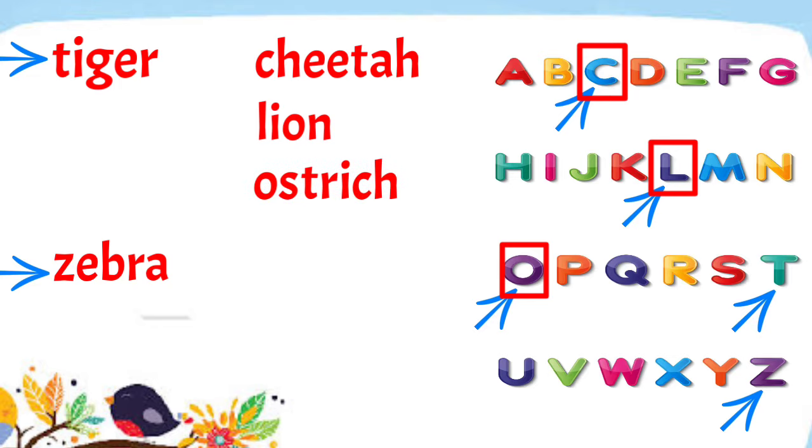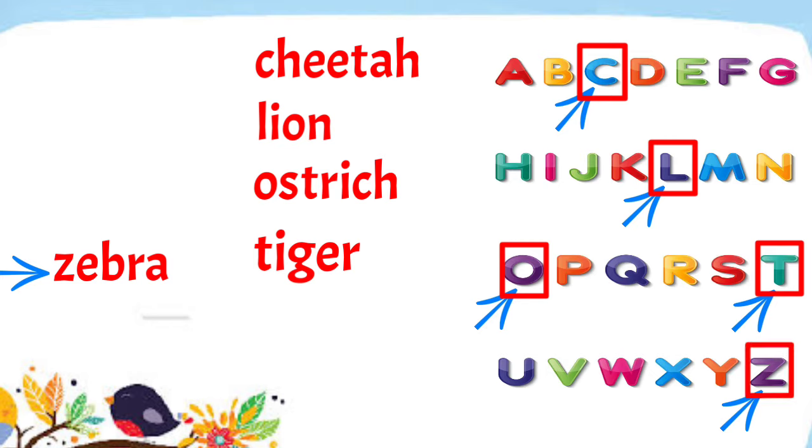Now let's have the fourth letter. It's letter T. So we have to put Tiger next to Ostrich. Finally, the fifth letter in the group that appears in the alphabet is letter Z. So the last word that we have to put is Zebra.